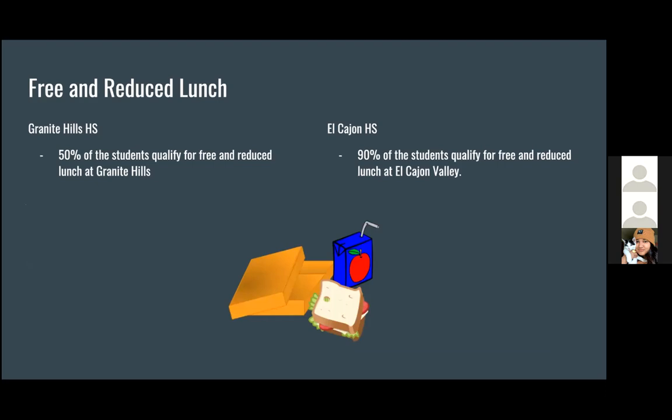For free and reduced lunch, Granite Hills High School has 50% of students qualifying, while El Cajon has 90%. These schools are only two blocks away, and with such a large population of students qualifying for free and reduced lunch at El Cajon, it speaks to the population being in a lower income area compared to Granite Hill.